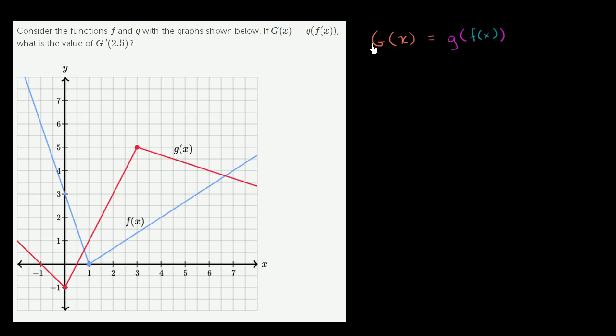If we want to take the derivative of capital G of x, and we do want to think about what the derivative is because they want us to evaluate the derivative at x equals 2.5. So let's take the derivative of both sides. On the left-hand side, we end up with G prime of x.